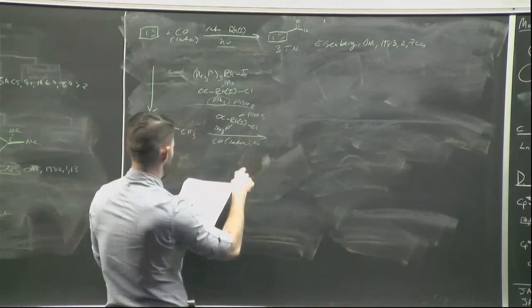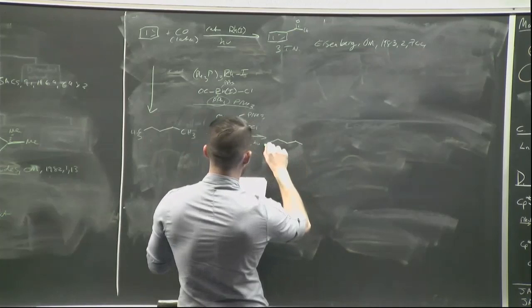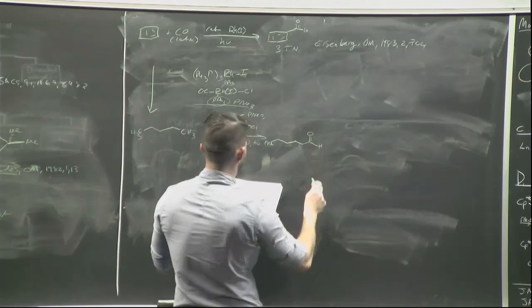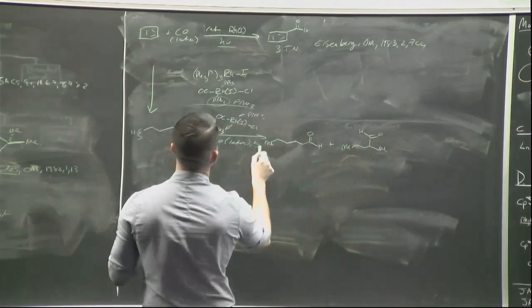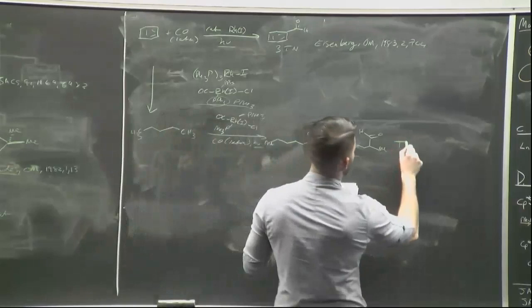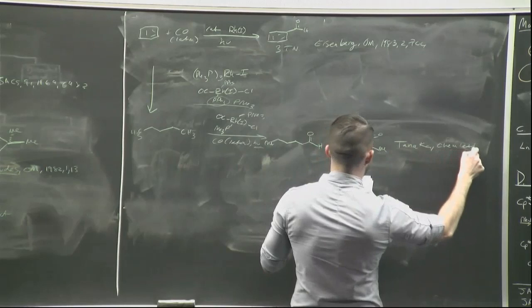Interestingly, Tanaka observed some branched product. Depending on the wavelength of light used, you can actually favor the primary versus the branched product. That reference is from 1987.